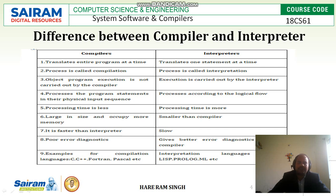Converting the source program into the output is called interpretation. Third difference: object program execution is not carried out by the compiler. The compiler converts the source program into the object program but does not execute it. Execution is entirely the responsibility of the interpreter, which executes the source program and produces the output.